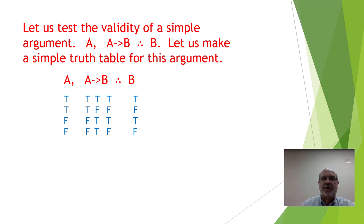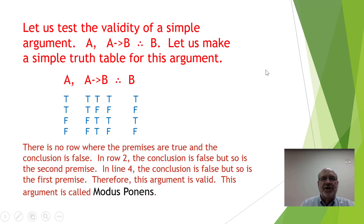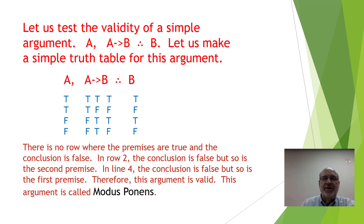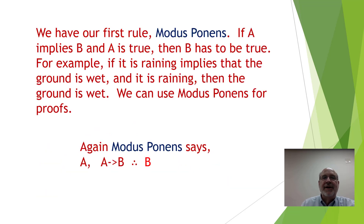Notice there is no row where the premises are all true and the conclusion is false. In row two the conclusion is false, but so is the second premise. In row four the conclusion is false, but so is the first premise. Therefore the argument is valid, and this argument is known as modus ponens.